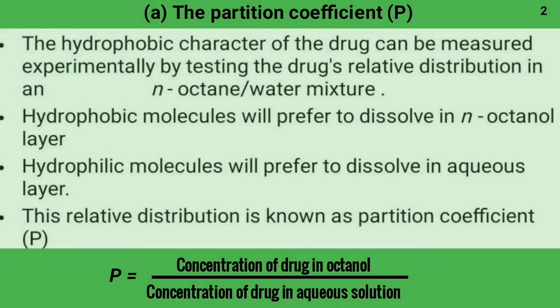The hydrophobic character of a drug can be measured experimentally by testing the drug's relative distribution between two immiscible solvents — one organic layer and one aqueous layer. The organic layer chosen is N-octanol. Hydrophobic molecules prefer to dissolve in the N-octanol layer, while hydrophilic molecules prefer the aqueous layer. This relative distribution is known as the partition coefficient, represented as P: P = concentration of drug in N-octanol divided by concentration of drug in aqueous solution.